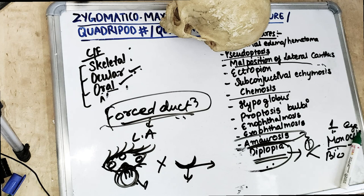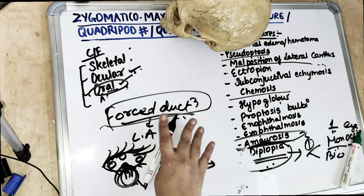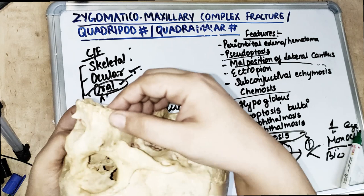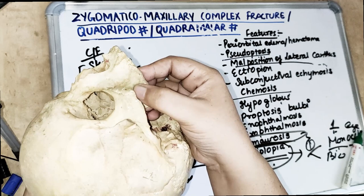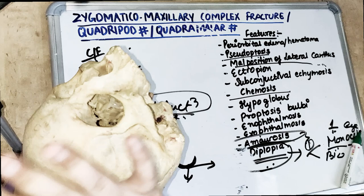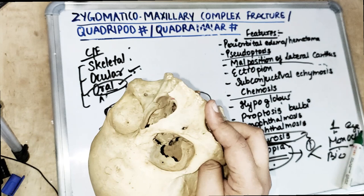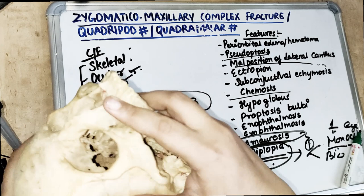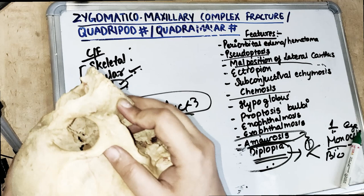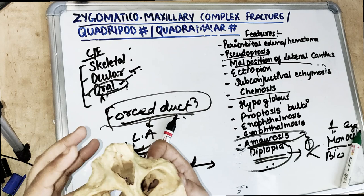Oral symptoms: because of the zygomatic bone fracture in the buttress region, there is ecchymosis in the gingivobuccal maxillary sulcus in the posterior region. There can be minor malocclusion in the maxillary premolar or molar region, though the patient may not subjectively complain of it. On palpating the zygomaticomaxillary buttress there can be a step deformity or palpable contour disturbances. The patient can also have difficulty opening or closing the mouth — trismus.